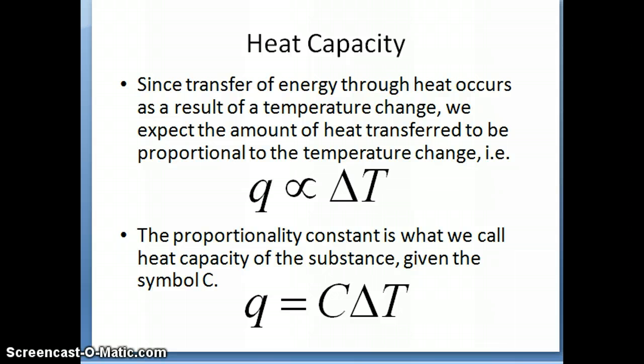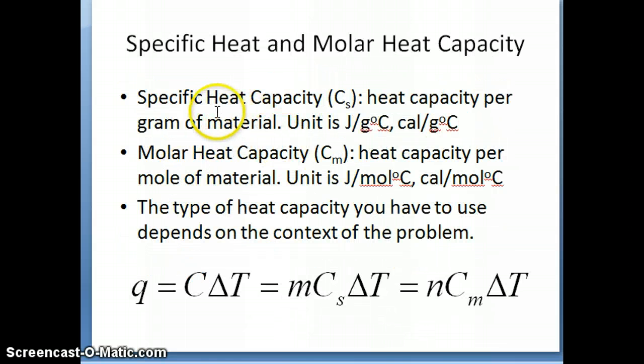We can write this equation then which is that Q is equal to C times delta T where C is your heat capacity. Now that we have these two new intensive property versions of heat capacity, we can rewrite that equation. If we want to express this equation in terms of specific heat capacity which is C sub S, then what we need to do is multiply the mass into the specific heat to get our heat capacity back and then multiply that by delta T.